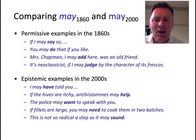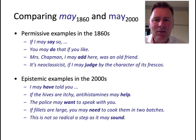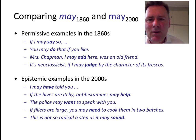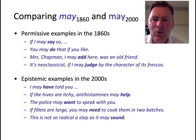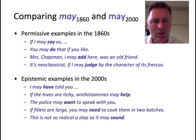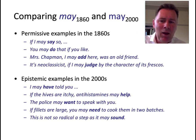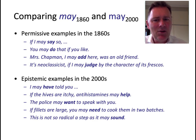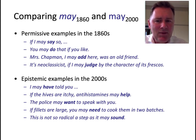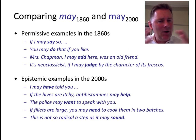On the other hand, verbs like have, help, want, and need tend to occur in examples encoding epistemic meanings. For the 2000s, we have examples like 'I may have told you,' 'antihistamines may help,' or 'the police may want to speak with you' — all encoding possibilities rather than permission. In the light of this additional evidence, I feel comfortable interpreting the move of may as a move into epistemic territory, and this kind of insight is really only possible if an entire paradigm of constructions is taken into view at the same time.